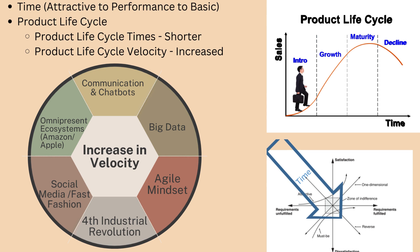Why has velocity increased? Look at the chart showing the increase in velocity and its causes: agile mindsets, the fourth industrial revolution, social media, fast fashion, omnipresent ecosystems like Amazon and Apple, chatbots and communications, and the use of big data. These have all increased the velocity of product life cycles and the movement within the Kano model from attractive to basic. Yesterday it took 20 years; today it could take five years or even one year to go from attractive to basic.